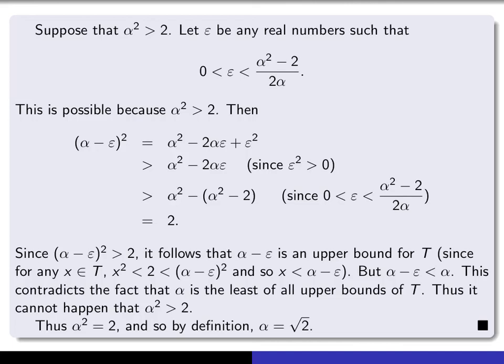It is therefore impossible for alpha squared to be bigger than 2, and so alpha squared must be equal to 2. By definition, alpha is the square root of 2. That completes the proof.